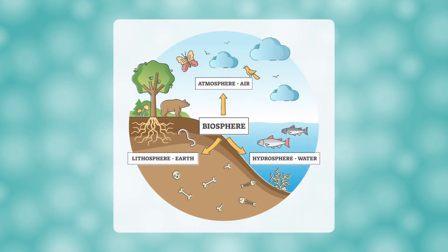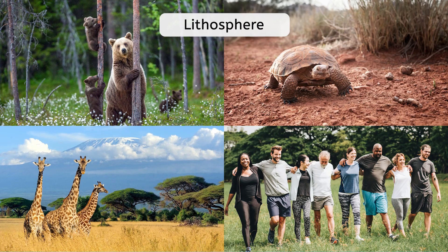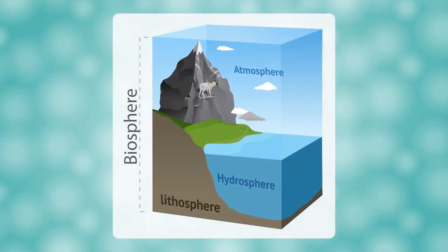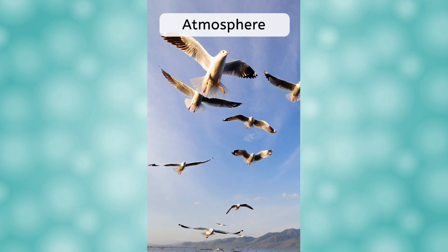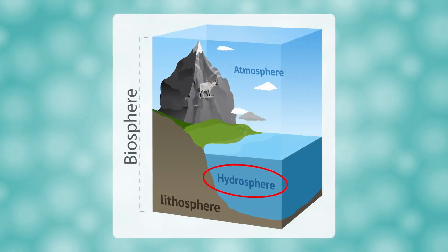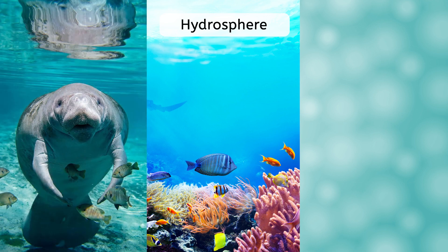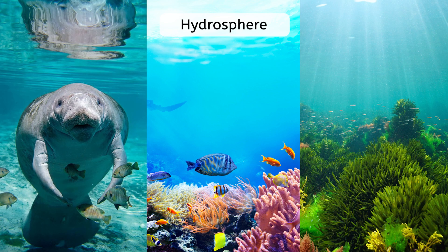The biosphere is divided into three layers. The lithosphere includes all of the solid land masses, such as continents and islands — we find life here such as trees, bears, shrubs, tortoises, grasses, giraffes, and of course humans. The atmosphere, which is the gaseous region above the surface, supports life as well, including many species of birds, flying insects, and bats. The third part of the biosphere is the hydrosphere, which includes all of the lakes, oceans, and other bodies of water that support life — home to many species of fish, invertebrates like corals, large marine mammals such as manatees, and even marine plants and algae that do photosynthesis and provide oxygen to the rest of the biosphere.